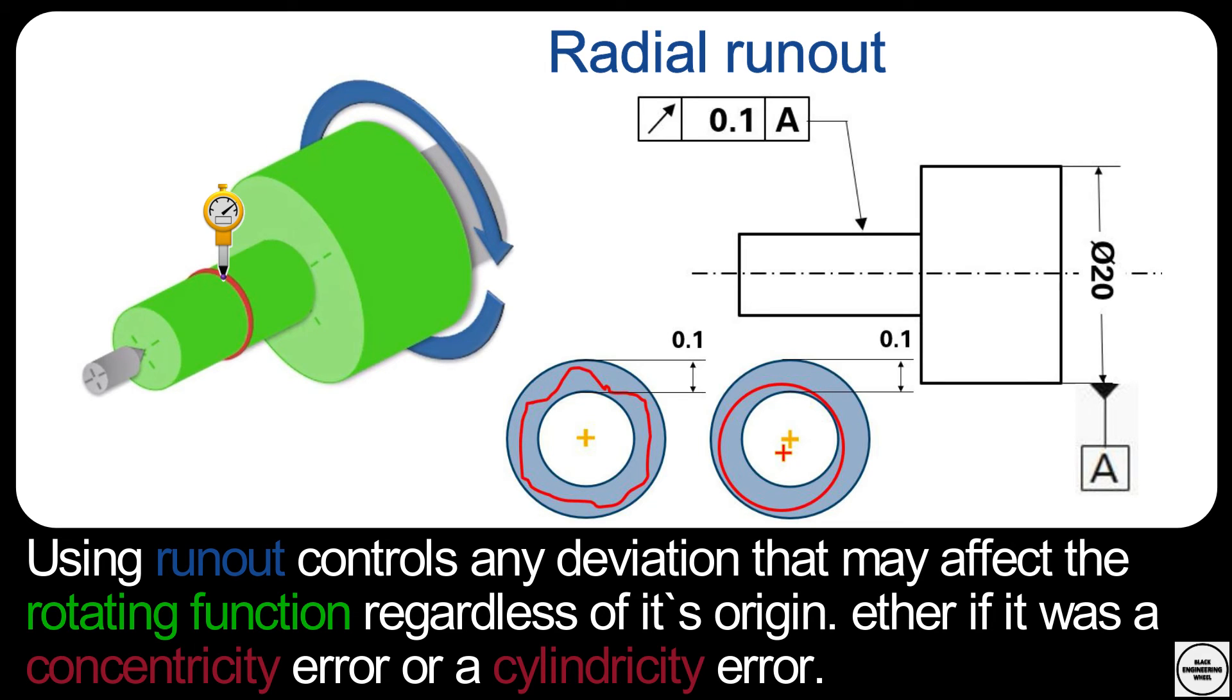But if you are in manufacturing and you find a part that is reading 0.2 out of tolerance, using only the runout measurement, you cannot find the source of the error in order to correct it. You would have to measure concentricity, circularity, straightness and so on individually.